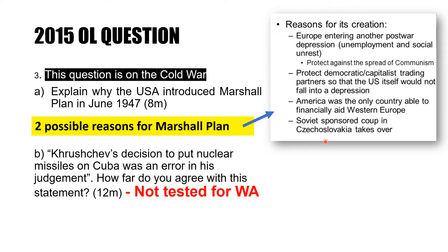The specific reasons are: first, to ensure that Europe doesn't enter a depression so that the spread of communism can be contained; second, to ensure the USA itself will not fall into depression — Europe must survive so the USA can continue trade. And of course, to stop the Soviet Union from expanding further into Eastern Europe.